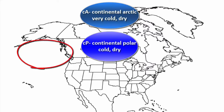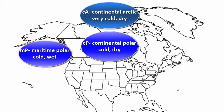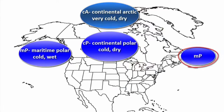Our next air mass is called a maritime polar. Maritime means that it's forming over the ocean, so it's going to have a lot more moisture in it than the continental air masses. Polar however means it's still cold because it's forming in a more northern area. So maritime polar air masses — lowercase m, uppercase P — are cold and wet. Notice there are two of them because there are two oceans on either side of North America.